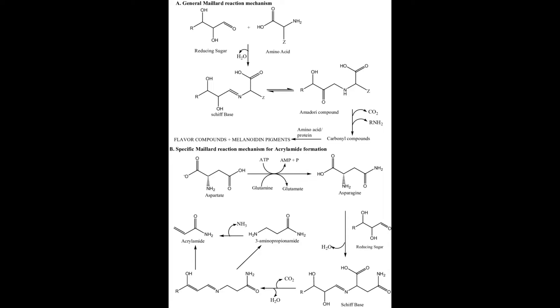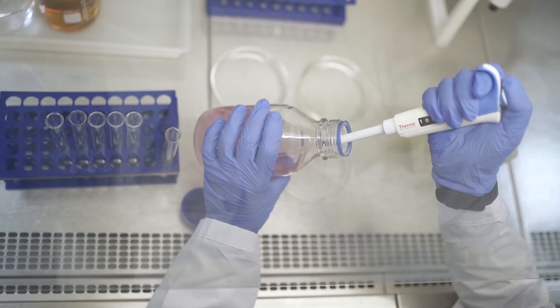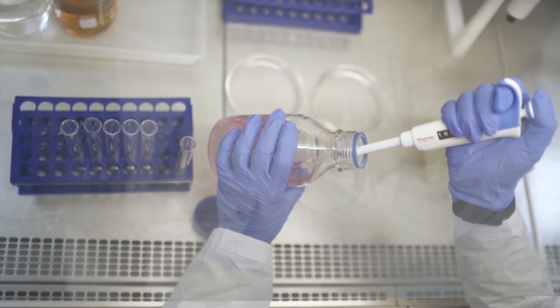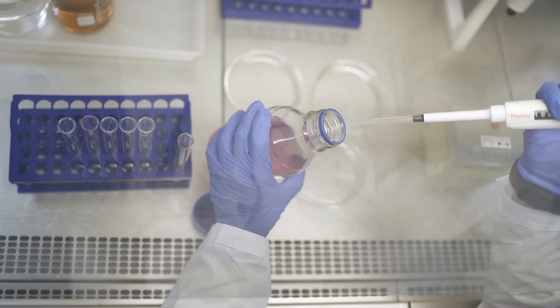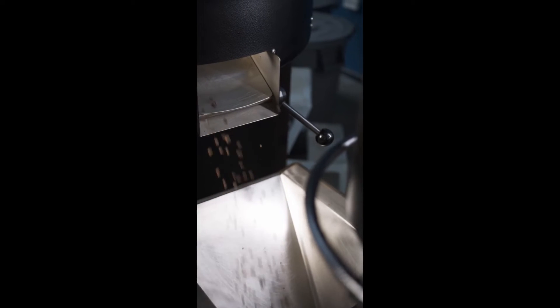It is important to note that the Maillard reaction between amino acids and reducing sugars can result in the formation of acrylamide, which is a possible carcinogen in humans. This compound is formed from the reaction between asparagine and dicarbonyl compounds. Factors affecting browning include water activity — maximum at 0.6 to 0.7 — and pH, where neutral and alkaline pH is favored.